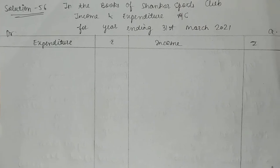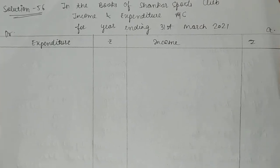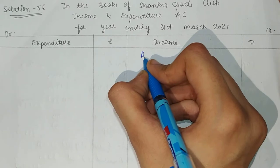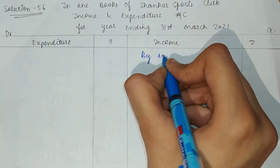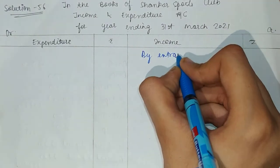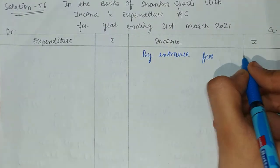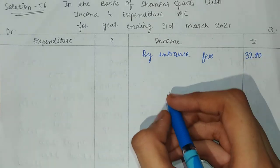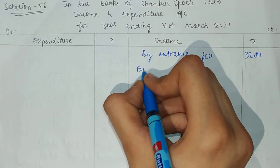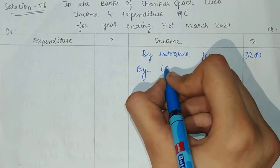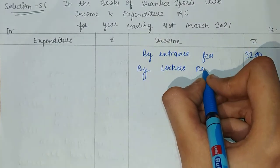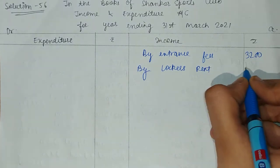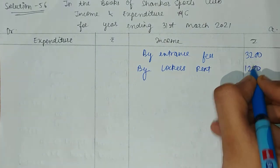Now in the Books of Shankar Sports Club, we prepare the income and expenditure account. First of all, entrance fees will come — that is $3,200. After that, locker rent will be included at $1,200. Donations for building will not be included.